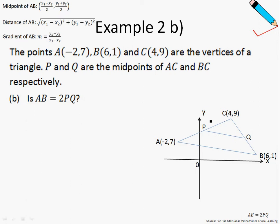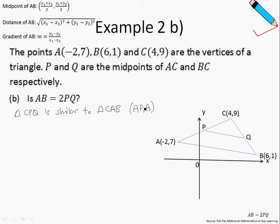Let's move on to example 2b. Example 2b asks: is AB equal to two times PQ? So essentially, is the distance AB twice that of distance PQ? In order to prove this, we must first prove that triangle CPQ is similar to triangle CAB, and this can be proved based on the angle-angle-angle property. Let me go ahead and prove this for you.